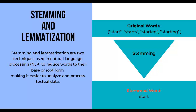What is stemming in NLP? Stemming is a text normalization technique used in natural language processing and information retrieval to reduce words to their base or root form. The goal of stemming is to map different variations of a word to a common root, which helps in grouping similar words together and simplifying the analysis of text data. In stemming, suffixes or prefixes of words are removed to obtain the root form, also known as the stem.